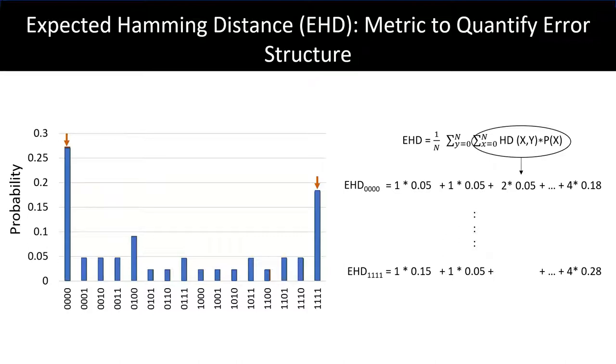The EHD allows us to measure the spread of the distribution. If errors are uniform, the spread would be higher. Whereas if there is a structure in errors, you would have a distribution with a lot of incorrect outcomes clustered around the correct outcome and the spread would be lower. We can show for a uniform distribution, the EHD tends to N over 2 where N is the number of qubits.